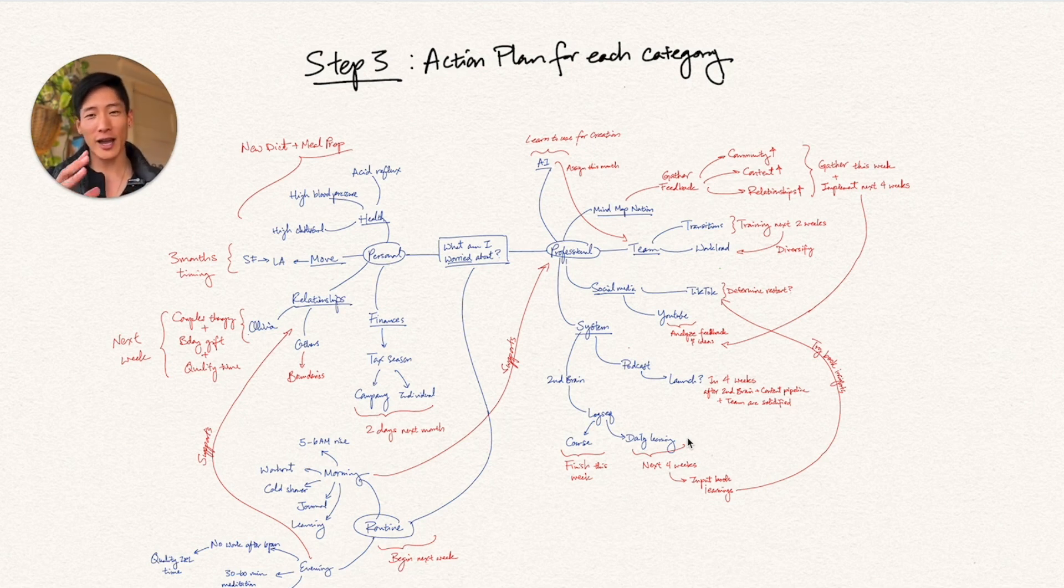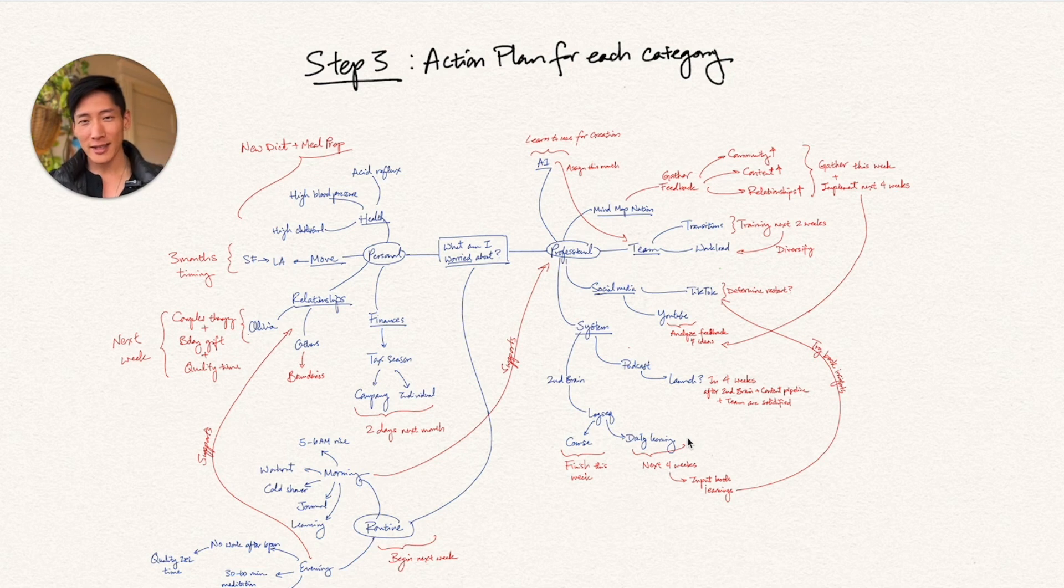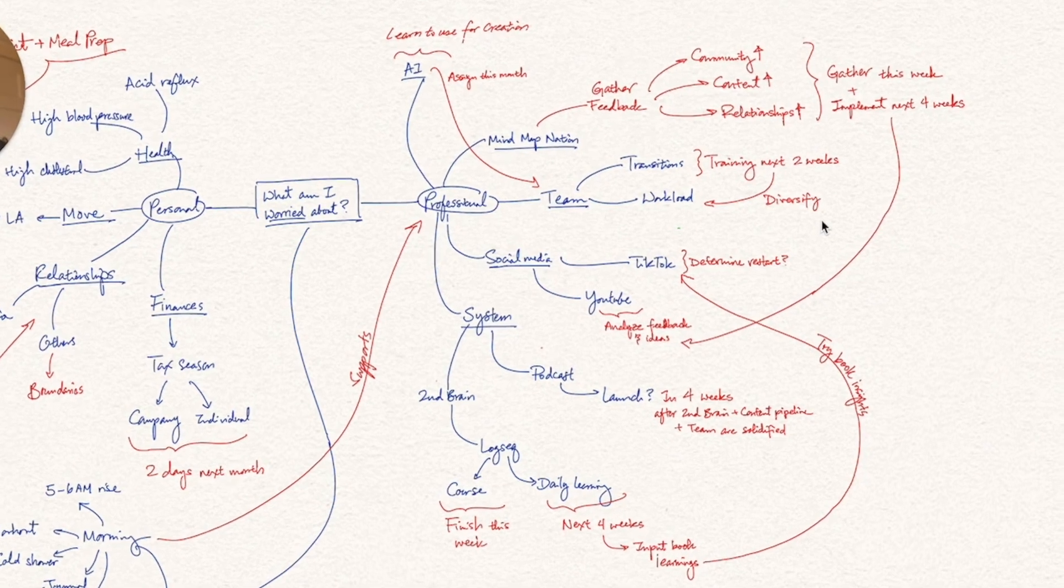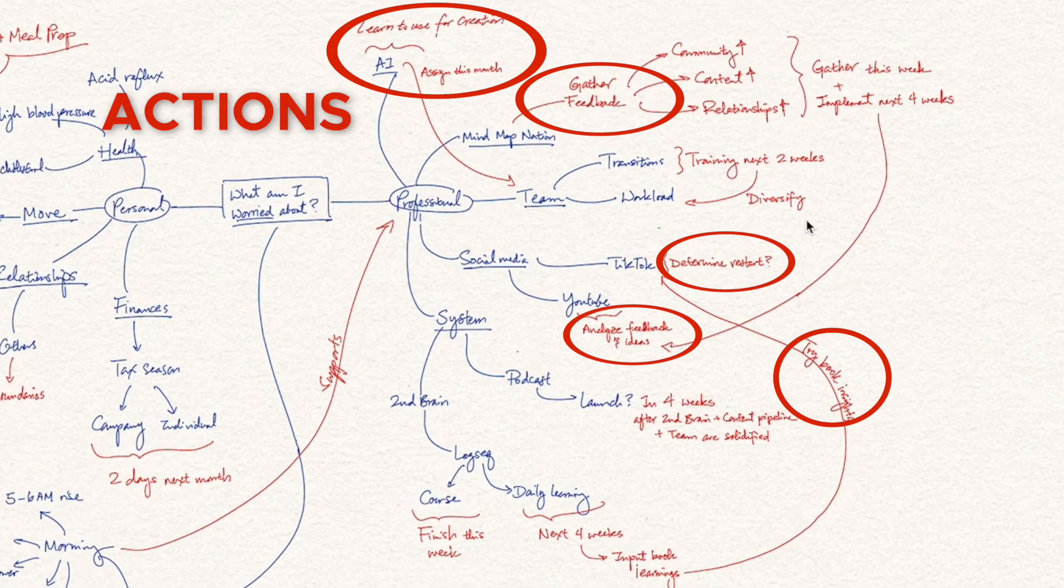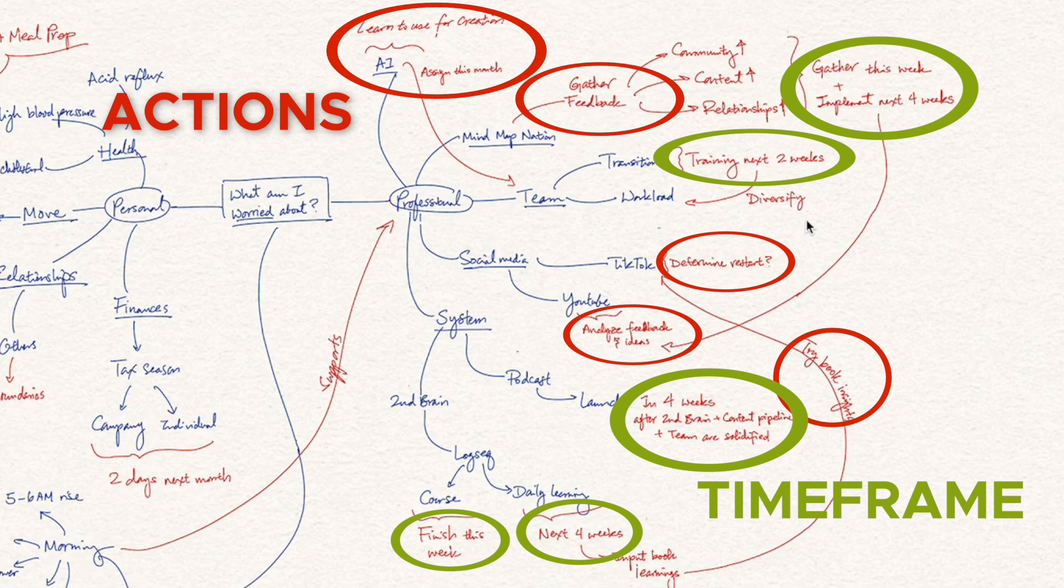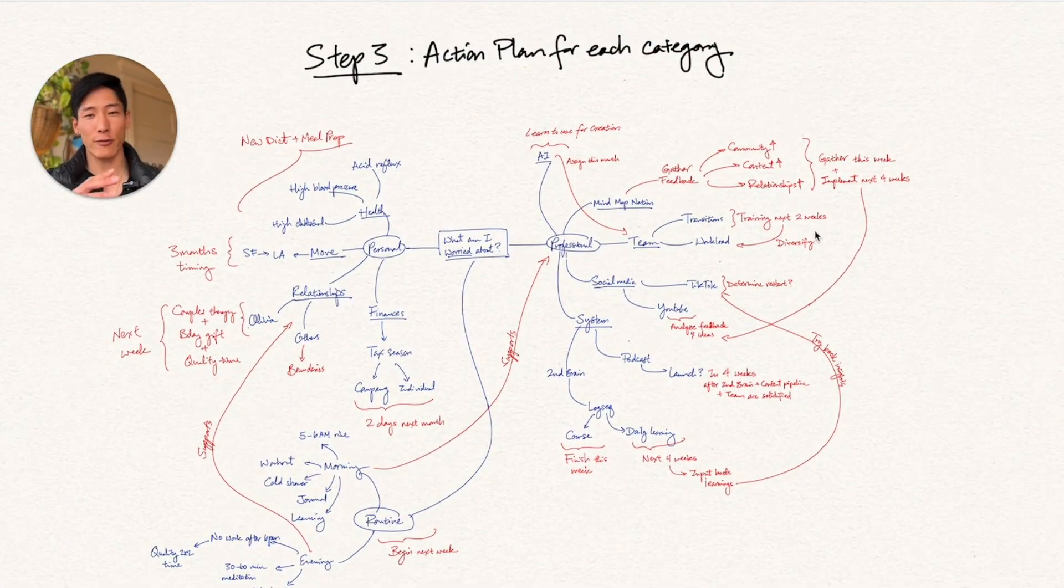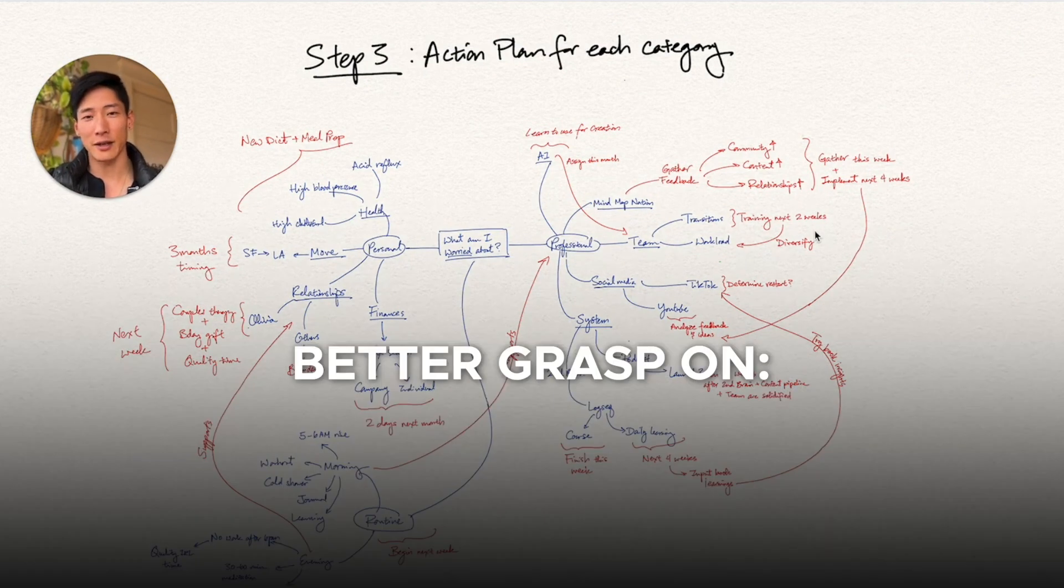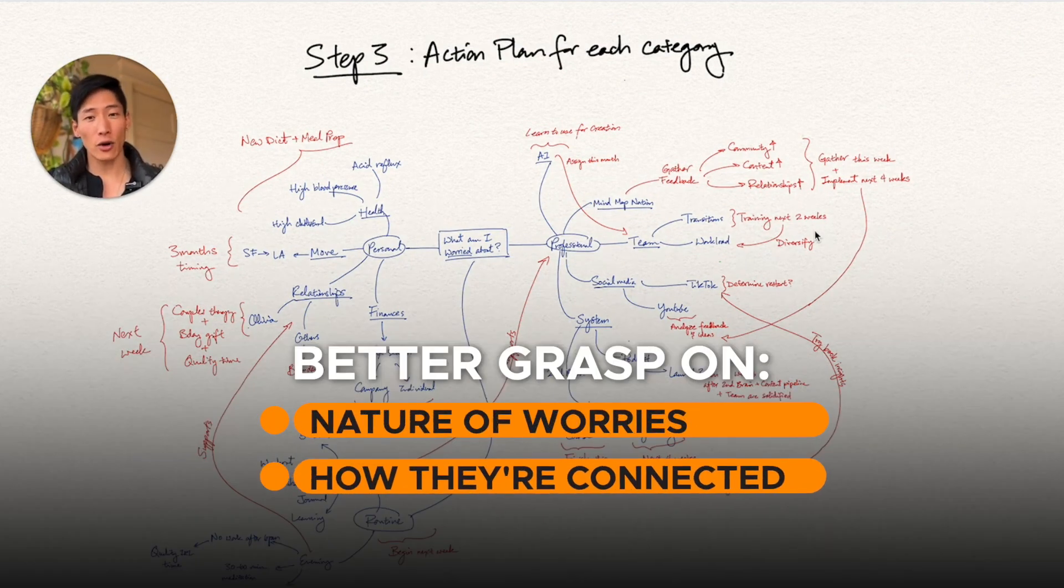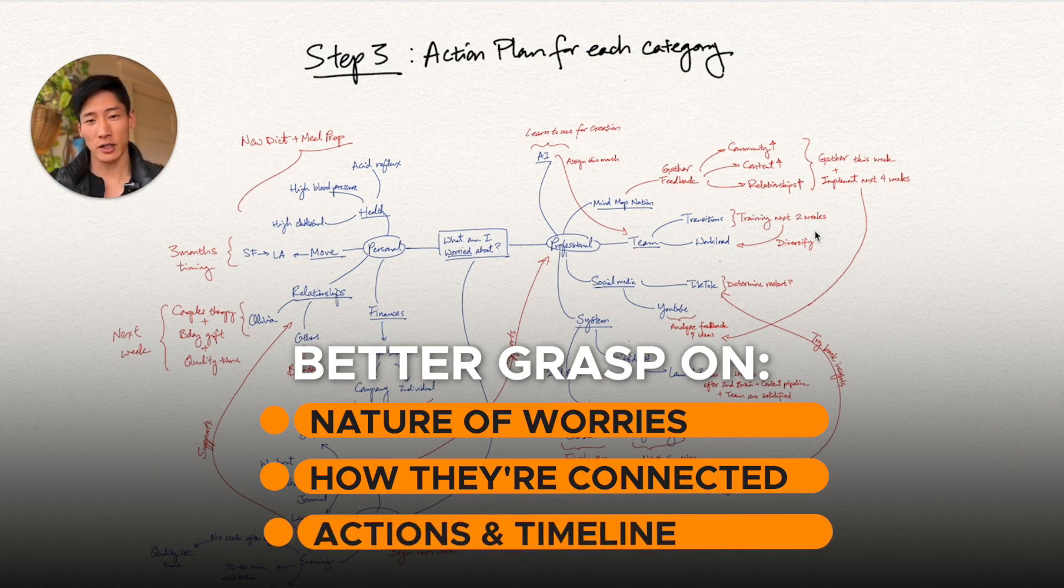The first map that I make is just putting in the entire mess of things in my life that comes to mind that's making me stressed, worried, fearful, anxious, whatever it is. And then after I have all the elements laid out, the connections and the annotations, I then can make a new map that is essentially representative of the insights that I got from the first one. This is where I can put down next to each of my areas of worry, the different solutions, as well as a timeline.